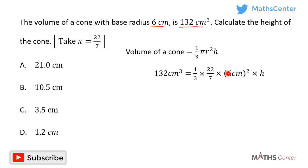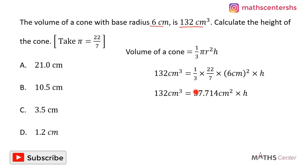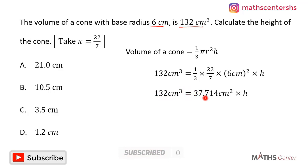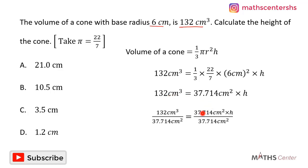Six squared gives us 36 centimeters squared. One divided by three times 22 divided by seven times 36 centimeters squared gives us 37.714 centimeters squared. So we have 132 centimeters cubed equal to 37.714 centimeters squared times h. To get the height we divide both sides by 37.714 centimeters squared, cancelling it on the right-hand side.